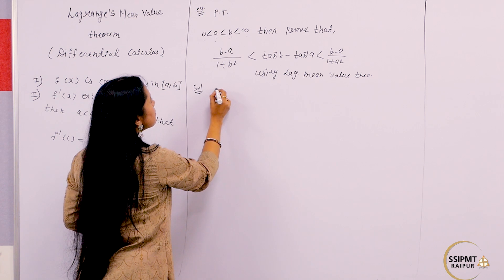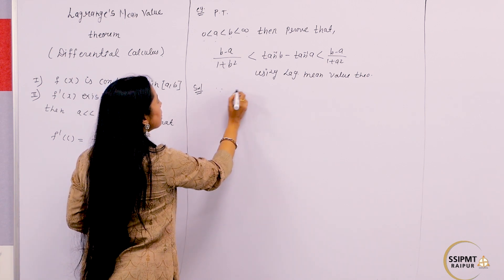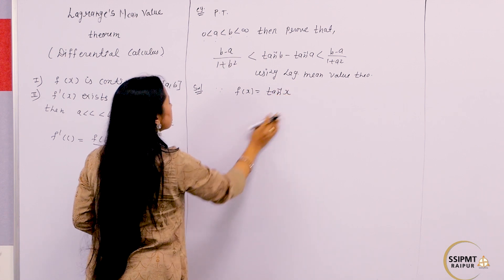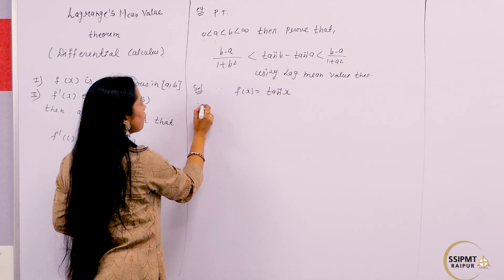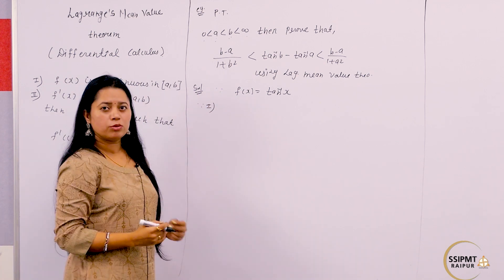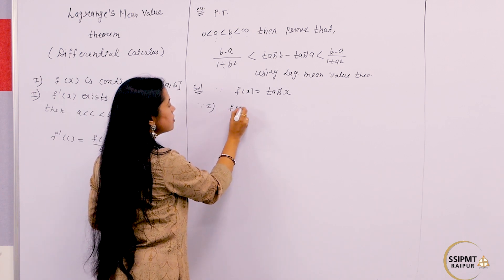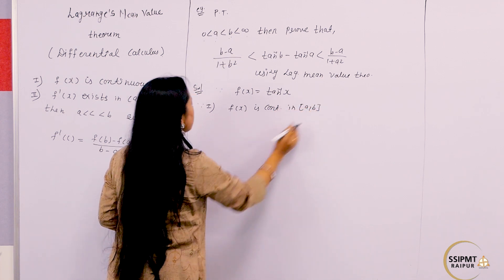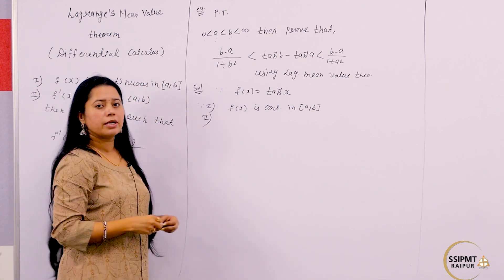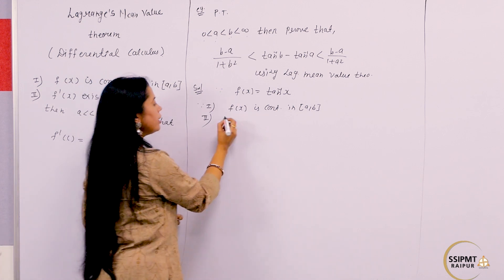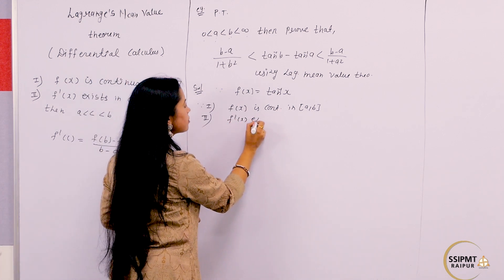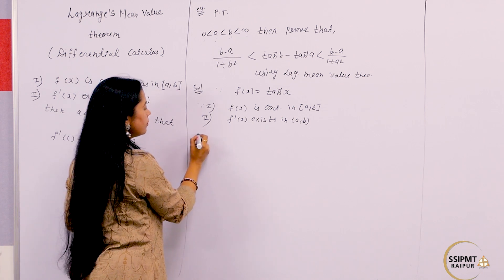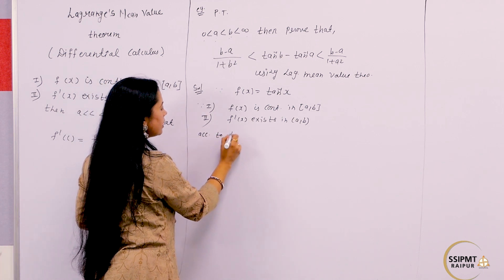Since the function is tan⁻¹(x), and tan⁻¹(x) is a continuous function in the interval 0 to infinity, therefore we can write that f(x) is continuous in the closed interval [a, b]. We also know that we can differentiate tan⁻¹(x) in the whole interval 0 to infinity, so we can write that f'(x) exists in the open interval (a, b). Therefore, according to Lagrange's Mean Value Theorem,